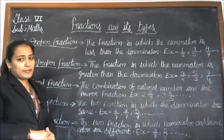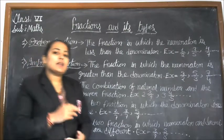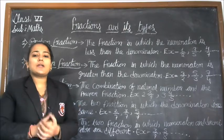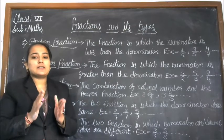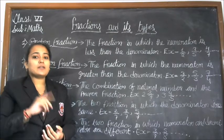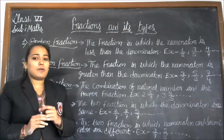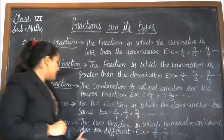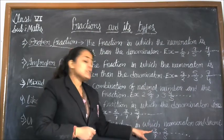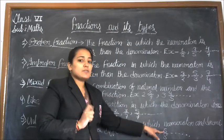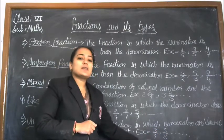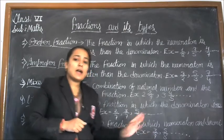The last one is unlike fraction. In unlike fraction we also compare two fractions, but when we compare them, the numerators and denominators are both different from one another. For example, 3 upon 7 and 5 upon 8: here 3 is the numerator and 7 is the denominator in the first fraction, and 5 is the numerator and 8 is the denominator in the second. Both the numerators and the denominators are different, so this is an unlike fraction.